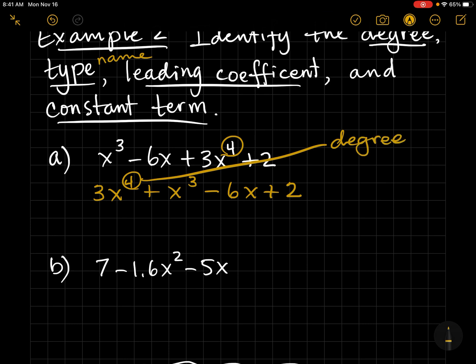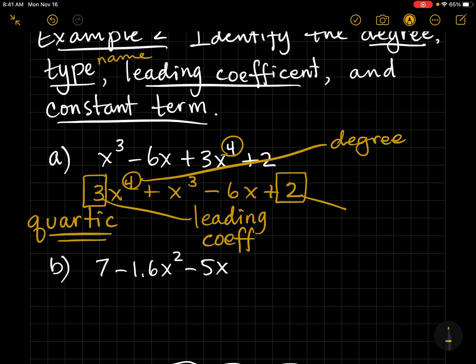The type, well, if four is my highest degree, that means this is a quartic. And now I'm also asking for the leading coefficient that's in front of the highest one, so that's why we call it the leading coefficient. And the constant term is the one without the variable. So, the constant term here is a positive two.